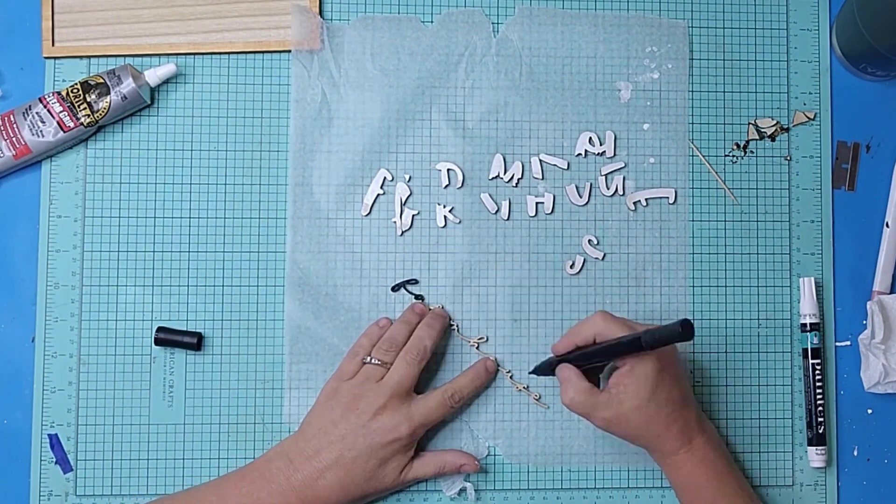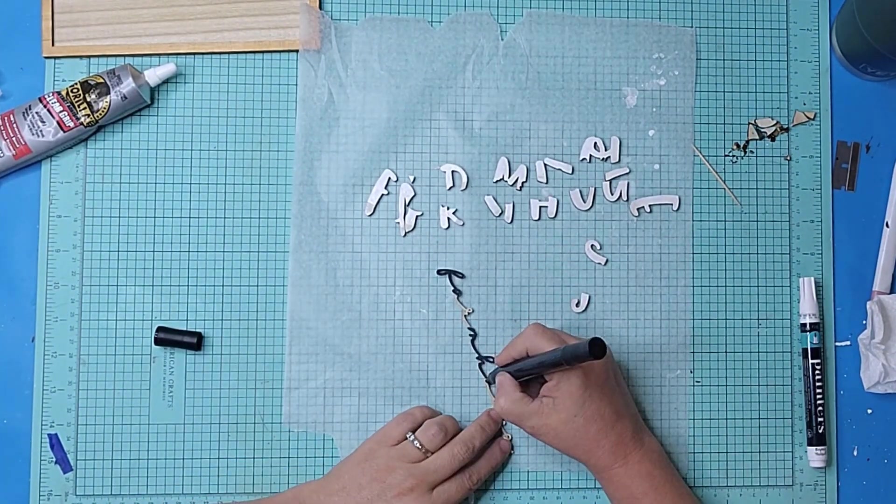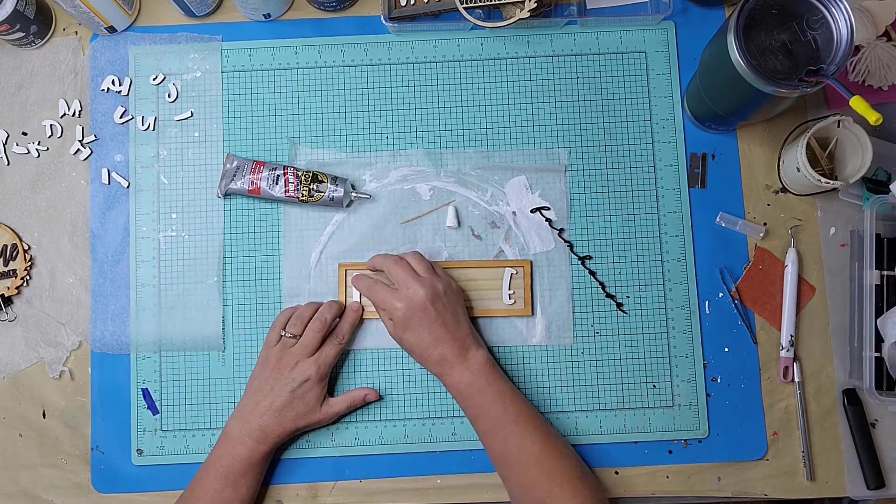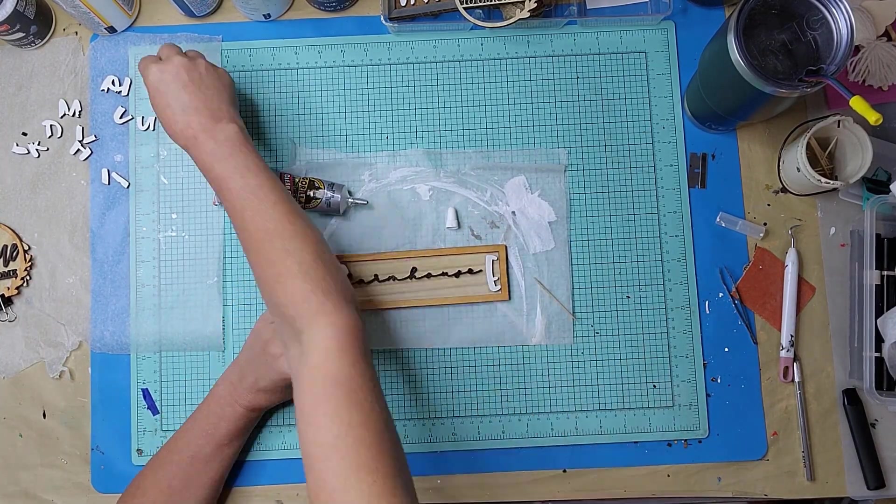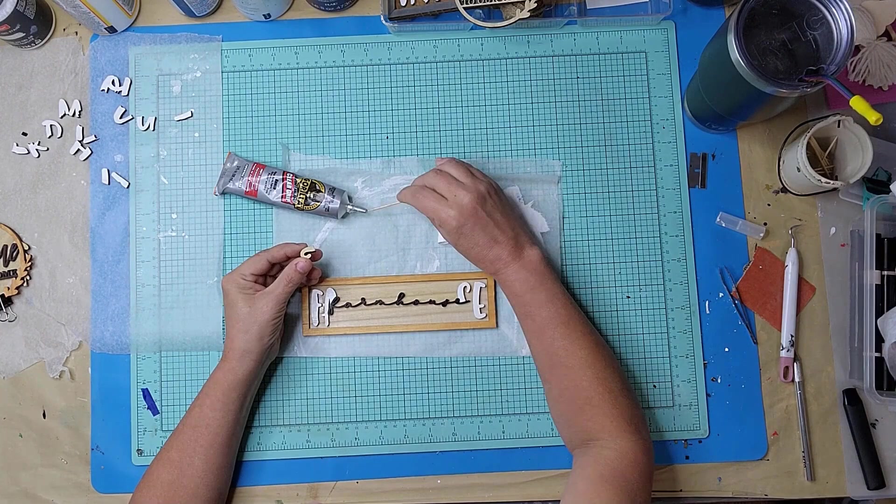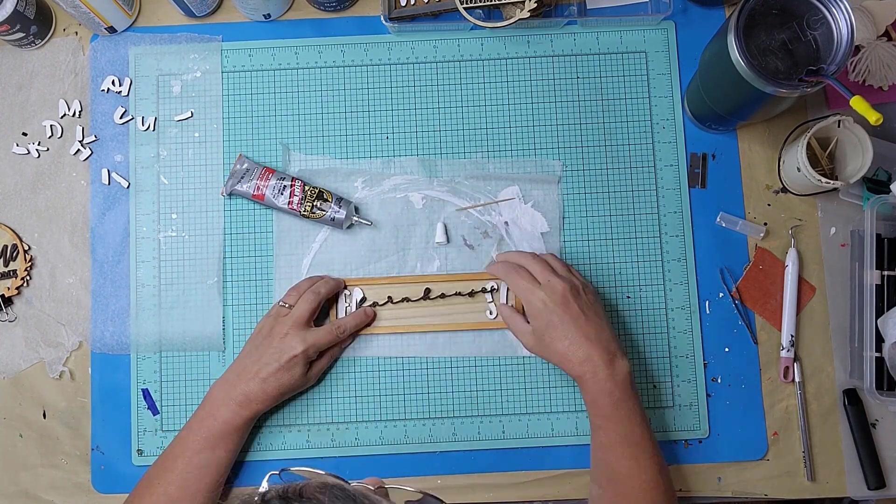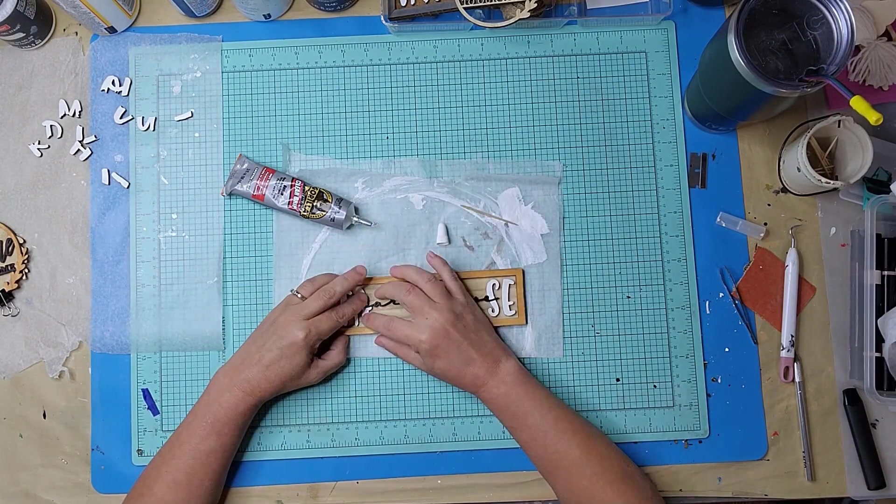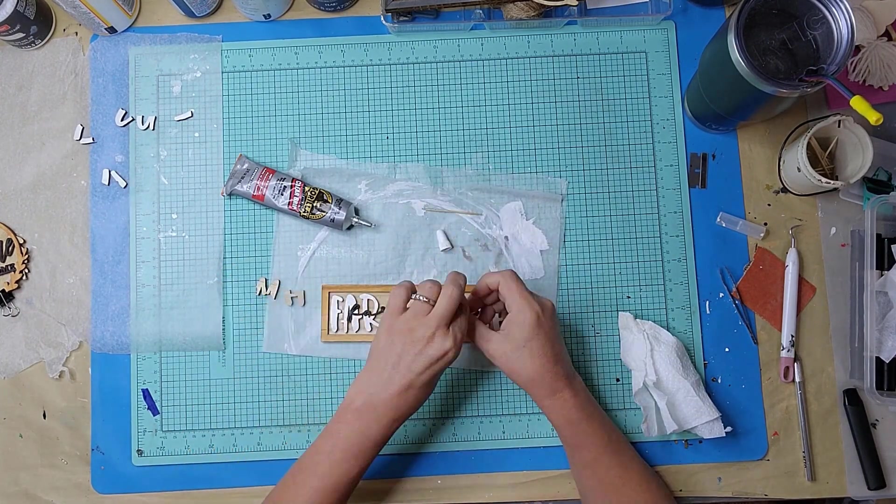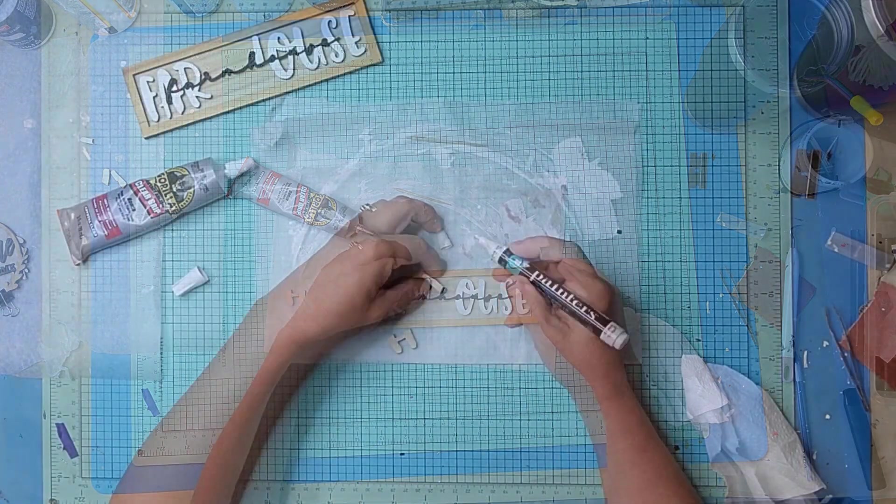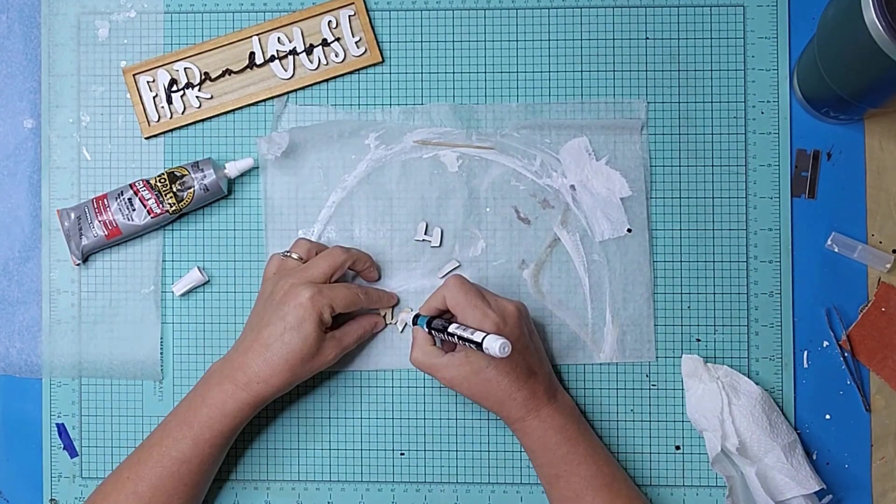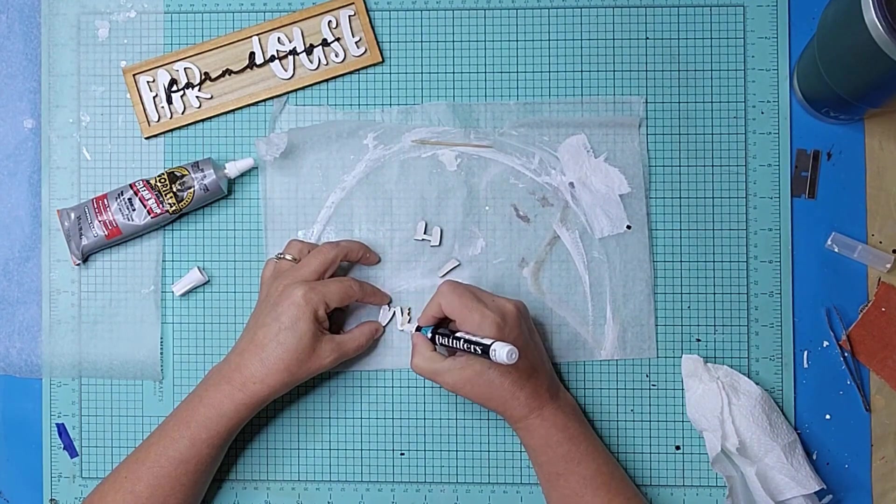And painted the smaller word with a dark alcohol marker. I attached the words to the frame using more of the Gorilla Glue. And this is where I realized I had painted the wrong side of a few of the letters. I flipped the letters over and repainted them before attaching.